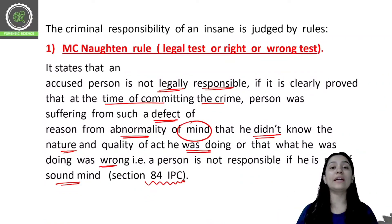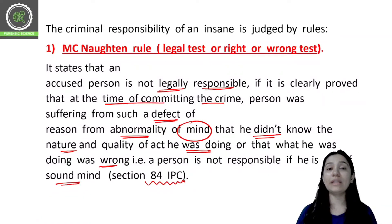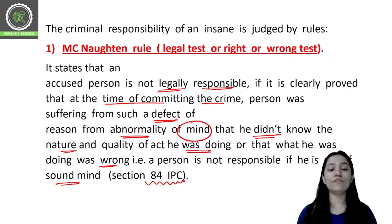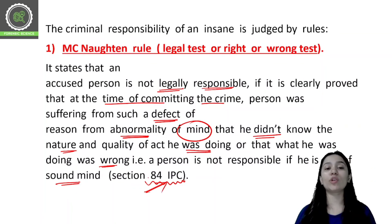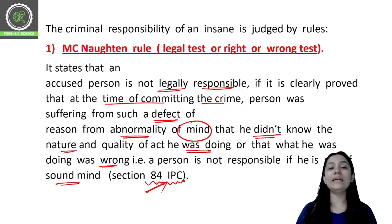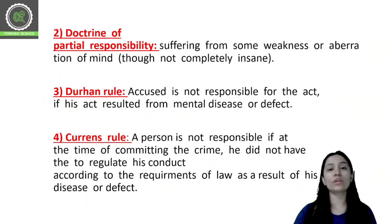If someone does not know what they are doing or that it is wrong, they will not be criminally responsible. This is Section 84 of IPC, and we know this as McNaughton's rule. It is a legal test, also known as the right-wrong test.